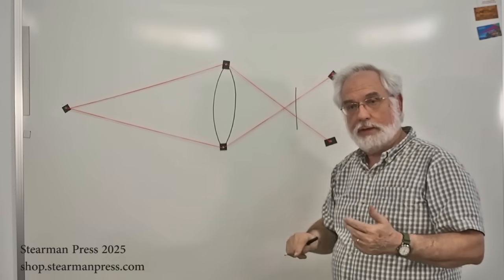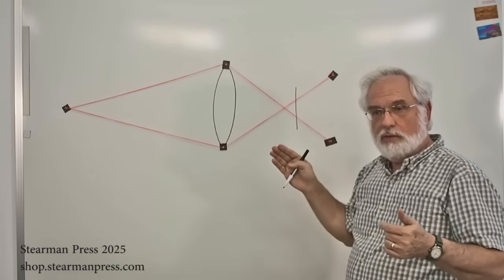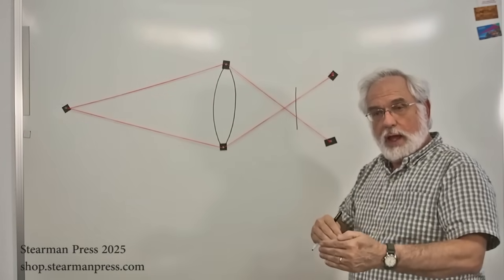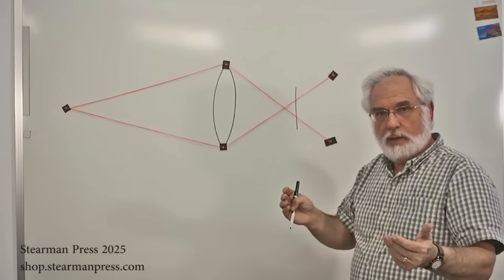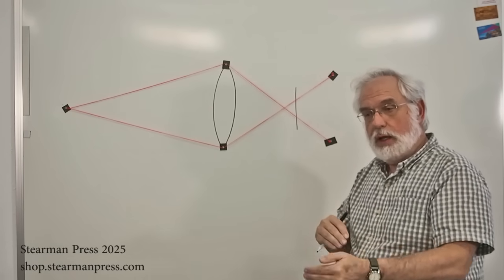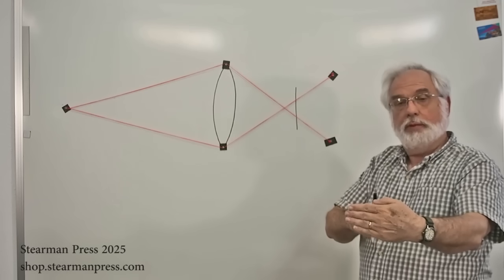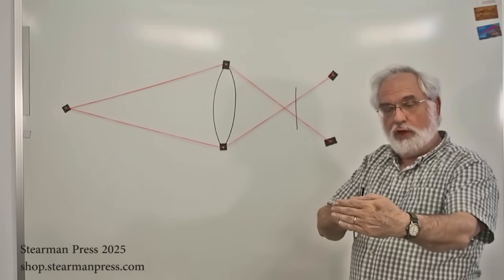And if you're a large format guy shooting view cameras, you're going to understand this because your focal length of the lens, if you have, say, a 210 millimeter lens, that means at infinity, focused at infinity, the distance from the optical center of the lens to the film plane will be 210 millimeters.